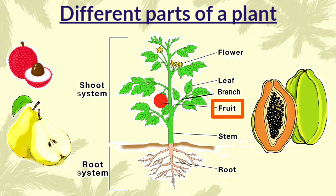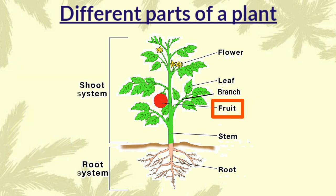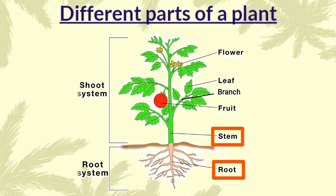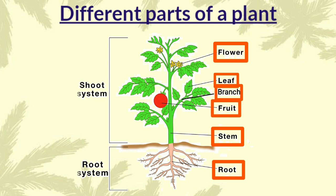I'm sure everyone loves to eat fruits, right? Children, we have to eat lots of fruits to keep us healthy. Different fruits have different tastes, colors, shapes and sizes. So children, what are the different parts of a plant? The different parts of a plant are root, stem, leaf, branch, flower and fruit. Each part of a plant is equally important and helps to carry out different functions to keep themselves healthy and strong.